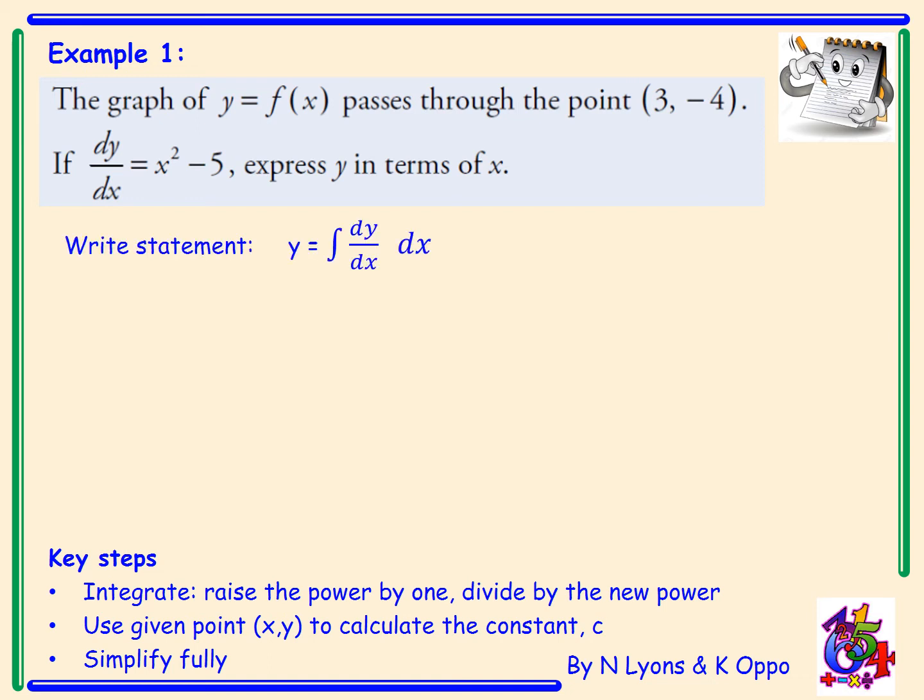First, we write the statement: y equals the integral of dy/dx with respect to x. Sub in the derivative, so y equals the integral of x squared minus 5 with respect to x. Simple integrating gives y equals a third x cubed minus 5x plus c, the constant of integration.